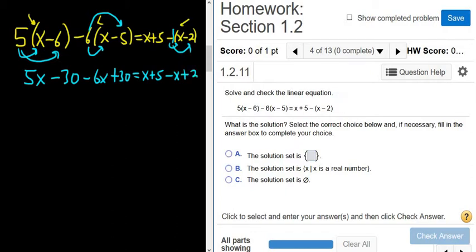Now we combine like terms. We have 5x minus 6x. 5 minus 6 is negative 1x, or just negative x.